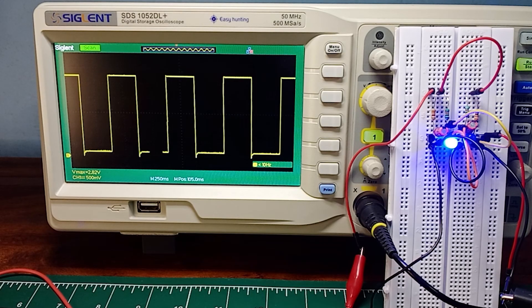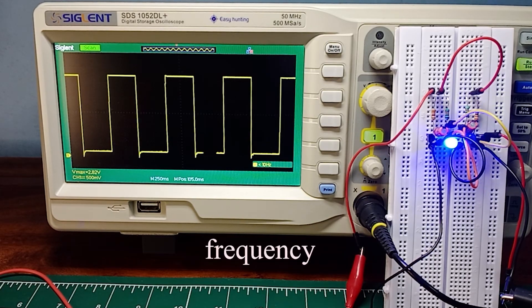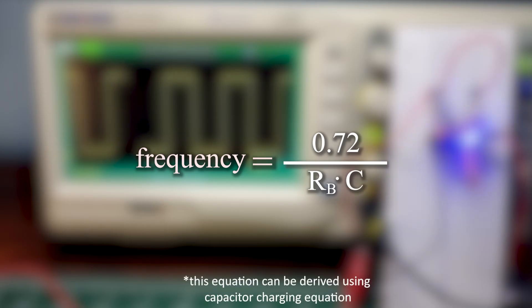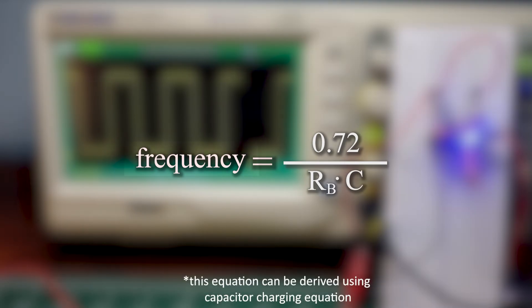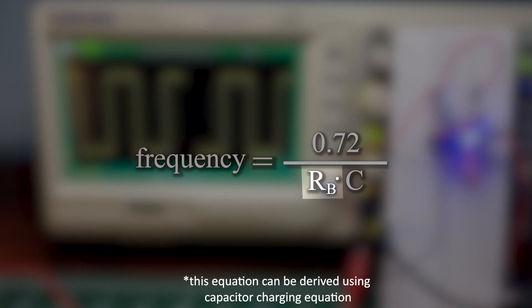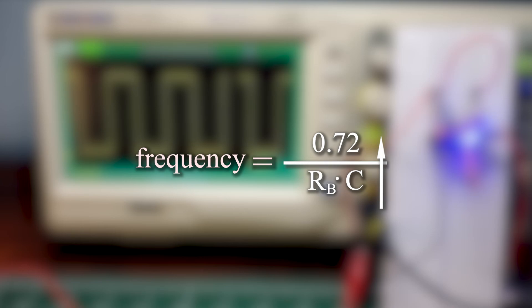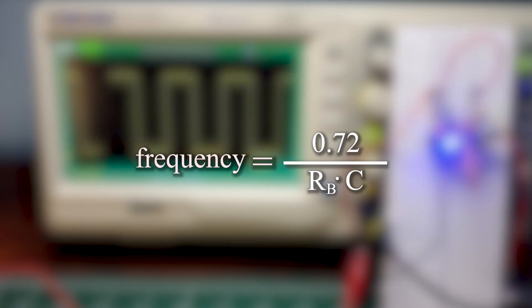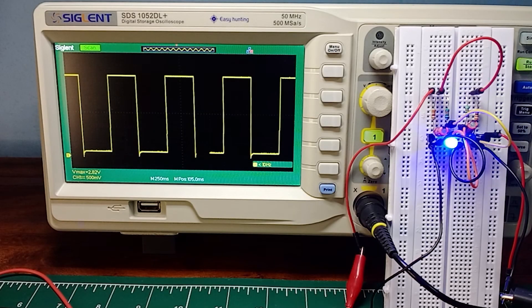This is how the waveform looks on the oscilloscope screen. The frequency of the square wave output of the astable multivibrator can be found using this equation. We can observe that frequency depends on the resistance of the base resistor and the capacitance of the capacitor. Higher values of base resistance or capacitance result in a lower frequency of square wave output, and vice versa. You can try different values of resistor or capacitor to get different frequencies.